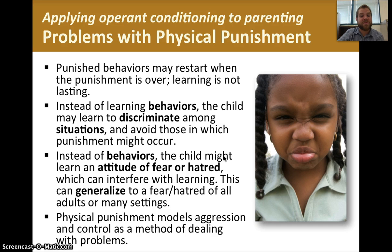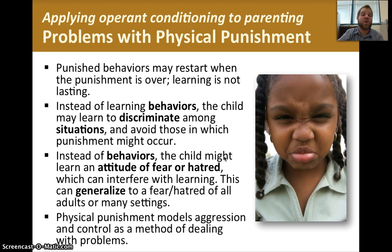Physical punishment models aggression and control as a method of dealing with problems. When we talk about observational learning, you'll see that if you use violence and force as a method of problem solving, your child learns that. Then later on in their life, they will probably — or at least they have a more probable outcome of — being violent and aggressive themselves.